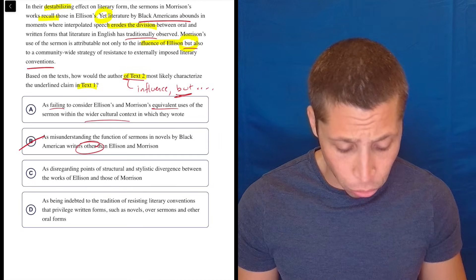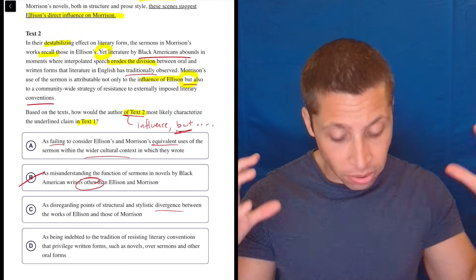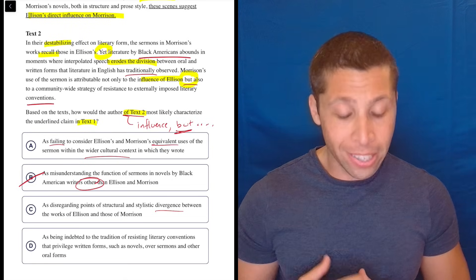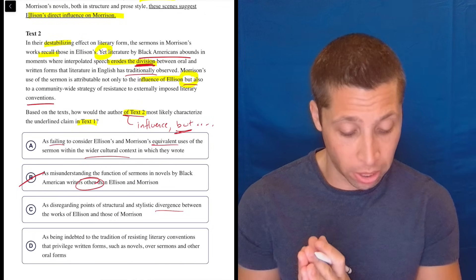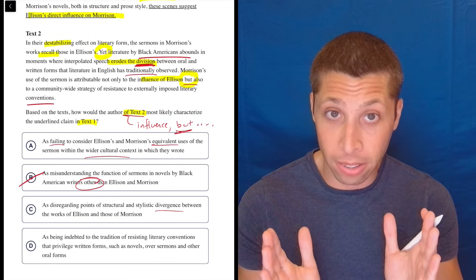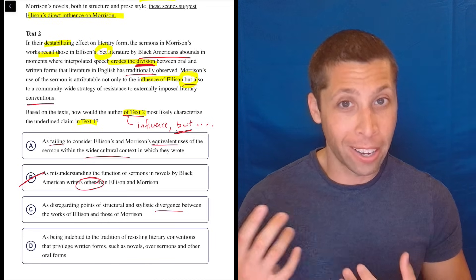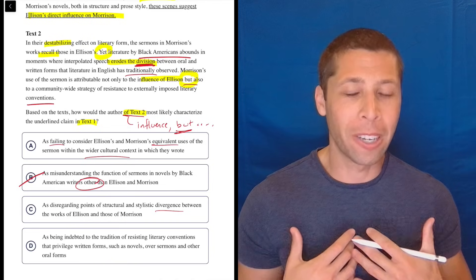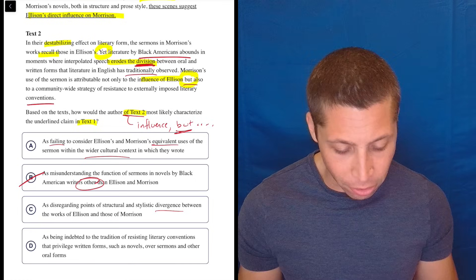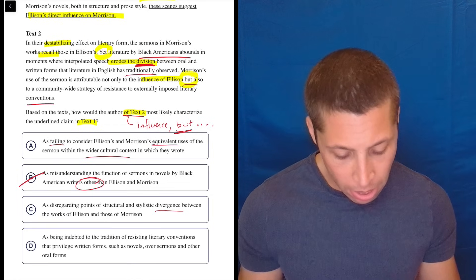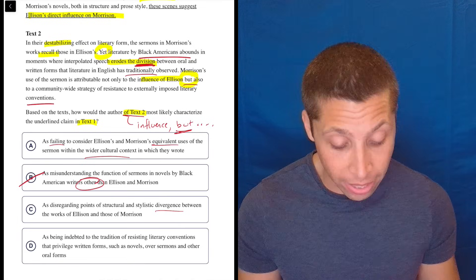C, as disregarding points of structural and stylistic divergence between the works of Ellison and those of Morrison. No, text two is still saying these two people are similar. And there is this word like division in text two, and this is a bit of a trap as well, but it's very specific to this passage. There's no division, or they're not talking about a division between Morrison and Ellison. They're talking about a division between oral and written forms of literature generally. So they're using the same synonyms in choice C and in the passage, but they're using it in completely different contexts. So there is no divergence that I can see between these two people. Maybe that's what the but is, is that they're not perfectly equivalent. I don't know, but I can sense the trap here.